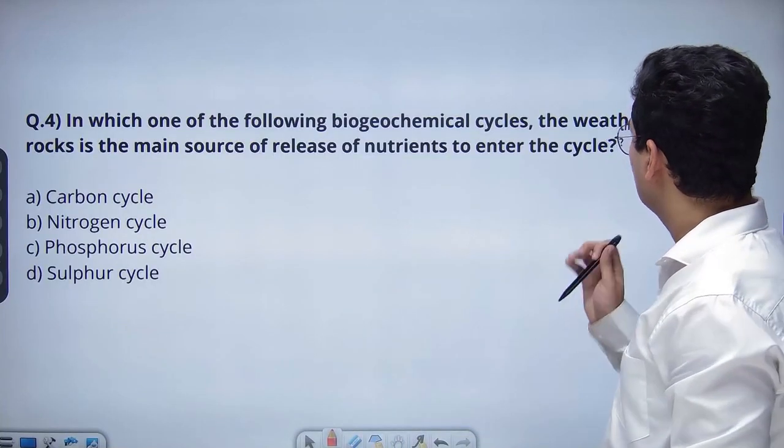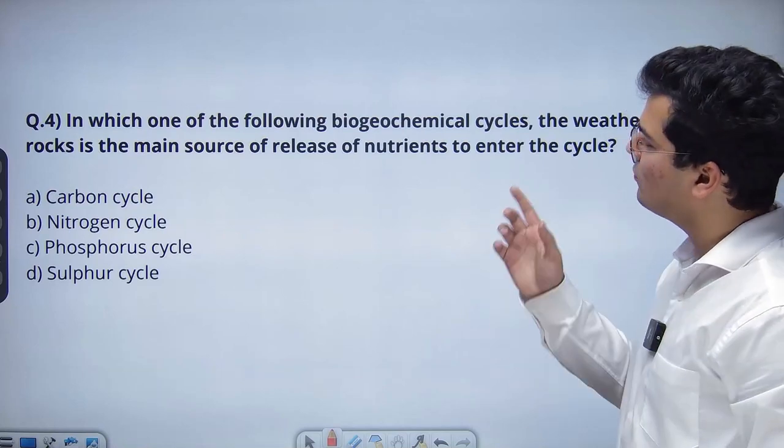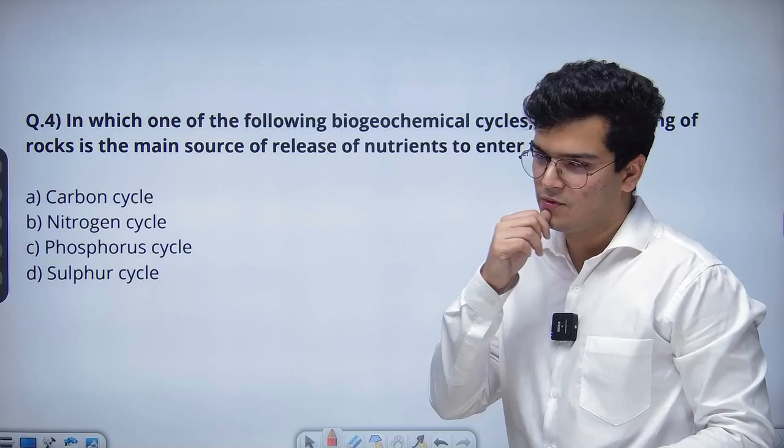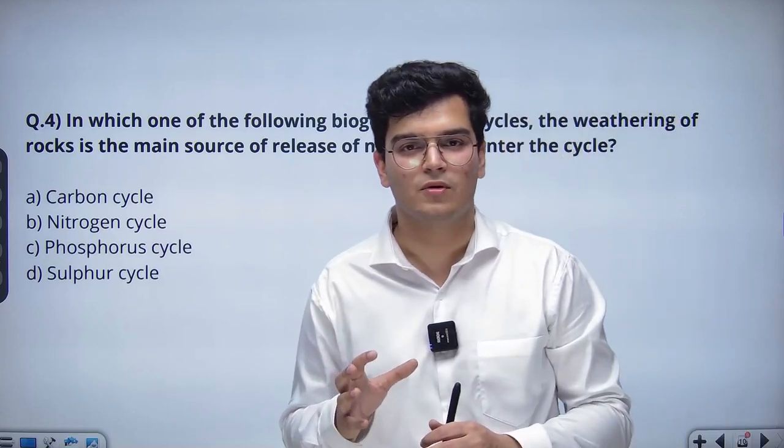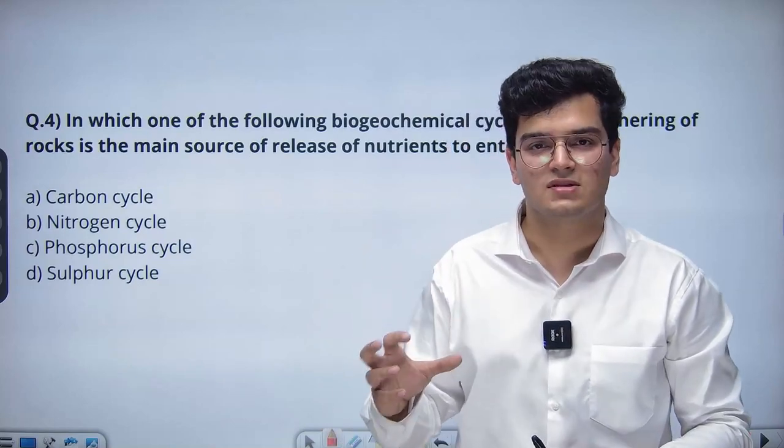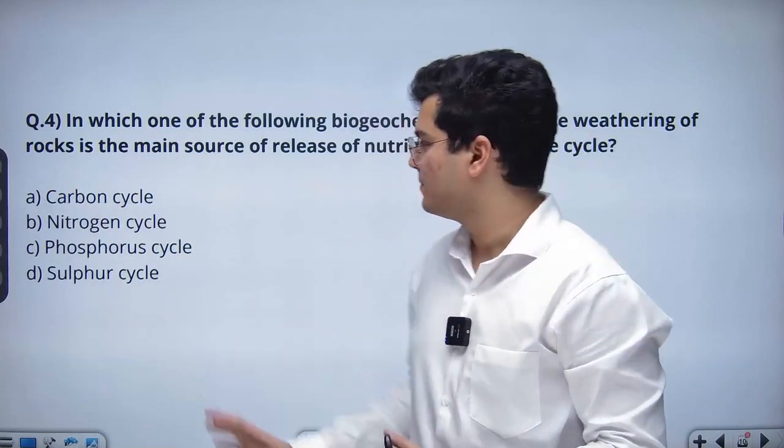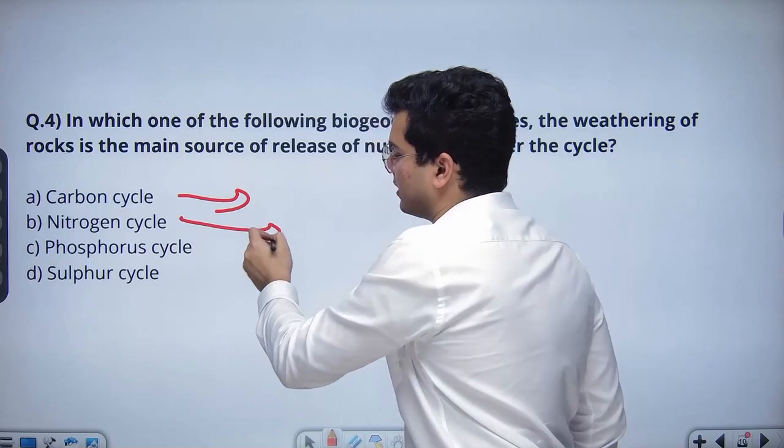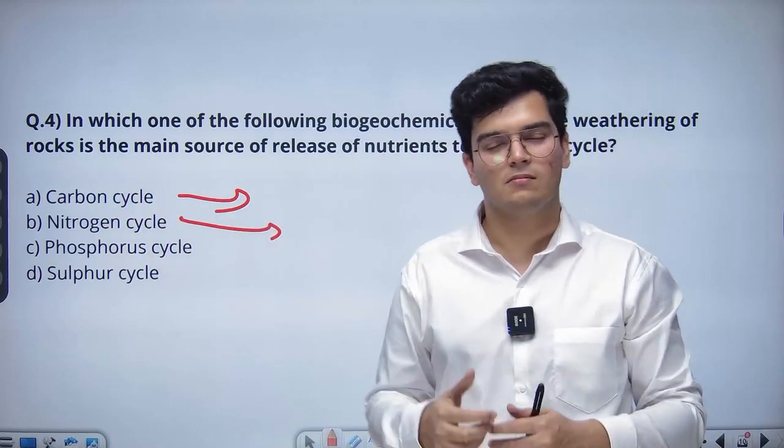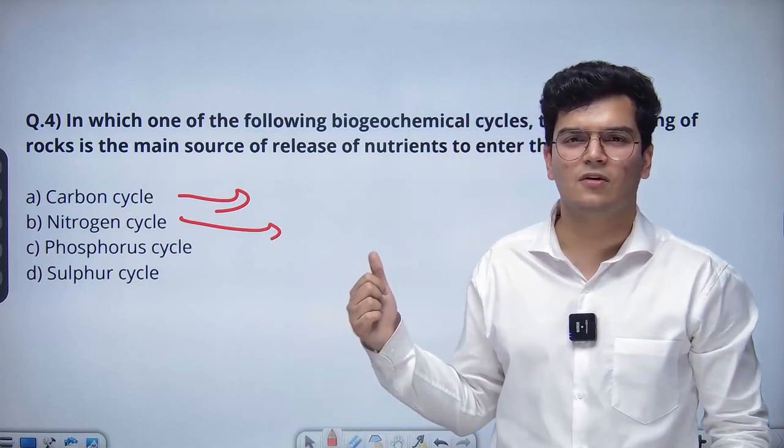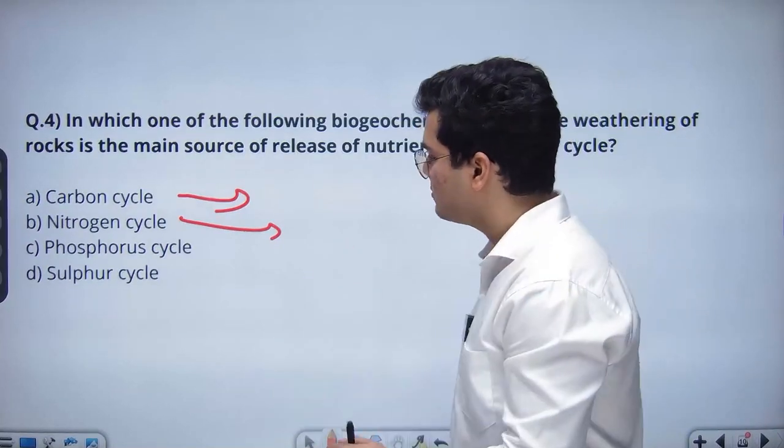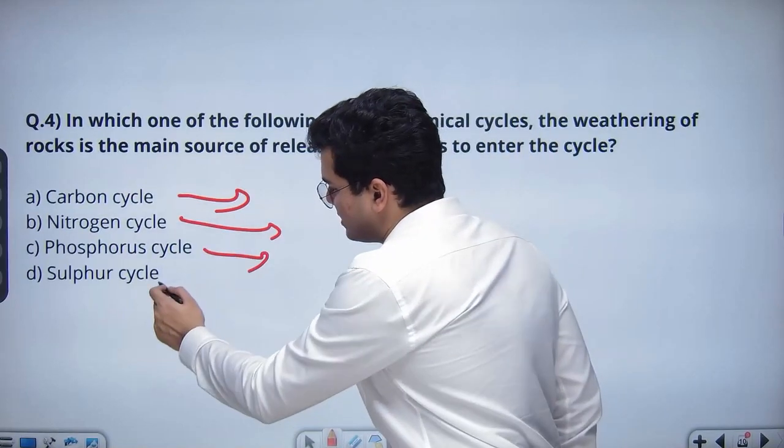In which of the following biogeochemical cycles is the weathering of rocks the main source of release of nutrients to enter the cycle? Basically, they're asking which cycle has minimal or no atmospheric component. We know that carbon dioxide and nitrogen are in the air, so obviously the weathering of rocks cannot be the main source. Now it only comes down to phosphorus cycle and sulfur cycle.